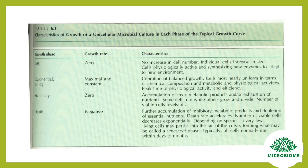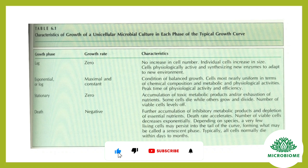In the death phase, the accumulation of inhibitory metabolic products and depletion of essential nutrients cause the death rate to accelerate, and the number of viable cells decreases exponentially. Depending on the species, very few living cells may persist into a tail of the curve, forming what may be called a senescent phase. Typically, all cells normally die within days to months.